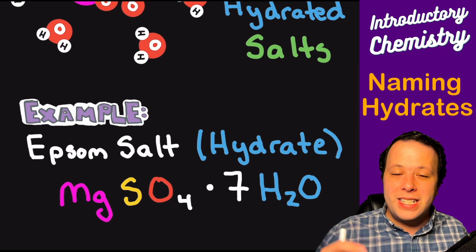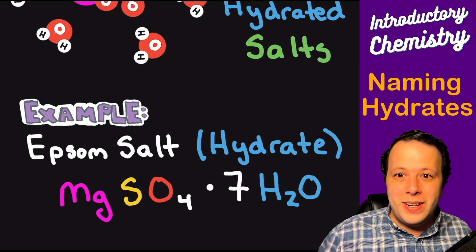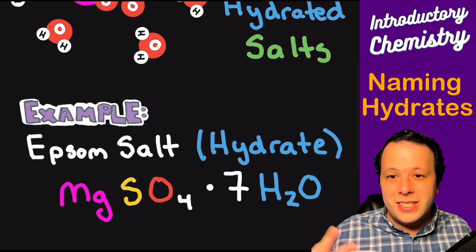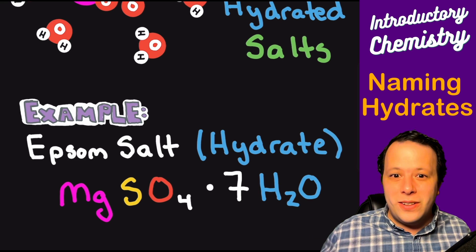So we're going to take a look at all the different naming for this. So we're going to learn how to name these guys, what they're all about, and many of them that you'll find in very common applications that you can easily get, like Epsom salt, something you can easily buy at a grocery store or hardware store. So we're going to take a look at all the different naming rules.